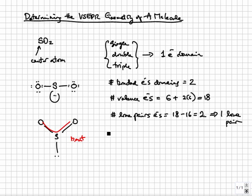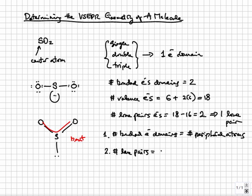To recap, you can determine the VSEPR template for every molecule with these two simple steps. One, the number of bonded electron domains equal the number of peripheral atoms. Two, the number of lone pairs equal the total number of valence electrons minus the number of electrons needed to satisfy the octets on the peripheral atoms and divided by two.